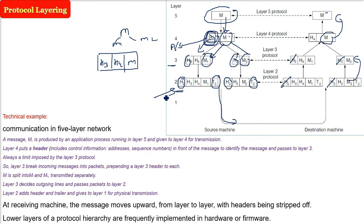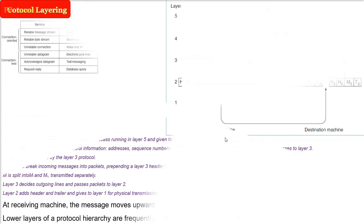The lower protocols of a network are normally implemented in hardware or firmware. When you open a mobile device, the initial messages you see are from firmware. Connections and reliability will be discussed in the next session.